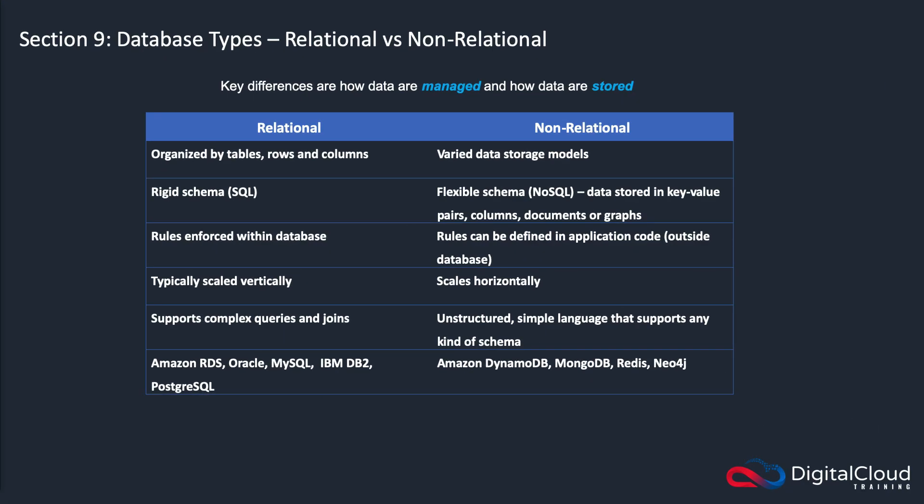Hi guys. I know many of you are new to AWS and potentially new to IT, so you may not have a background in databases. What I wanted to do is just provide a bit of a 101 on databases. This is structured towards the types of databases that exist in AWS, but this is not specifically exam material. It's more about giving you a background about the different types of databases, and I think this will help you understand the different offerings that AWS have, and work out in which situations you would use one database type over another.